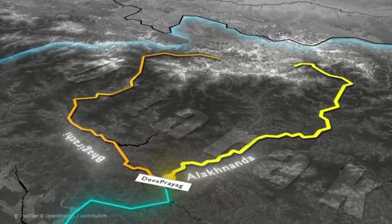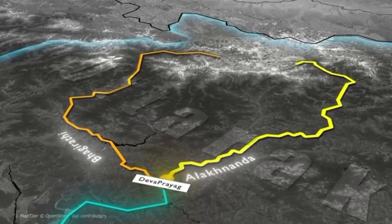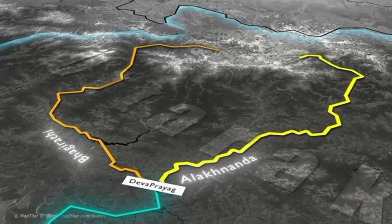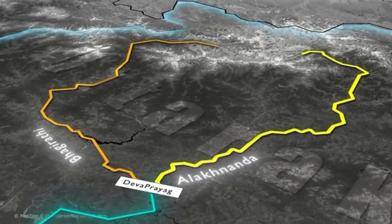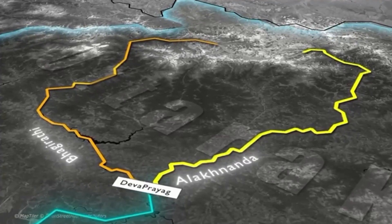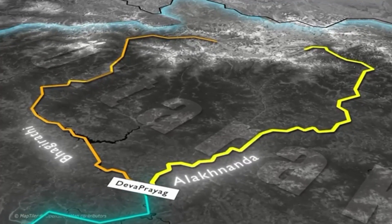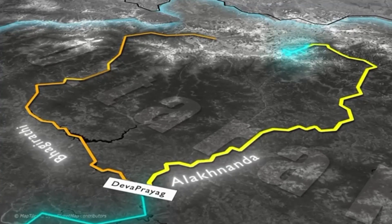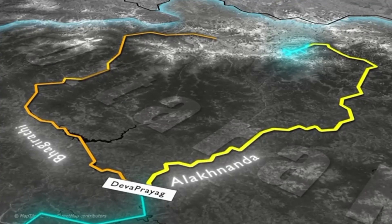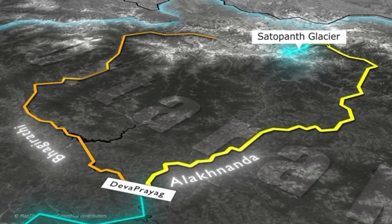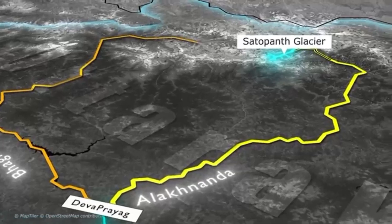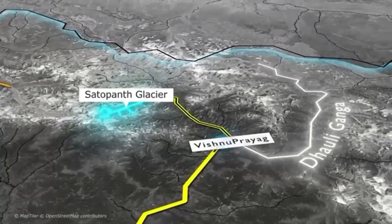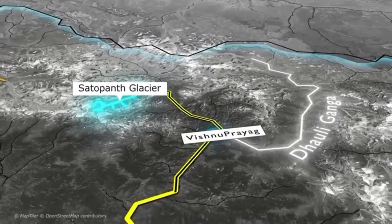Ganga is formed from six head streams and its five major confluences. The two main head streams are Alaknanda and Bhaagirati river. Alaknanda river rises at the confluence and feet of Satopant and Bhaagirati glaciers in Uttarakhand. It meets Dhali Ganga river at Vishnu Prayag, which is the first confluence.